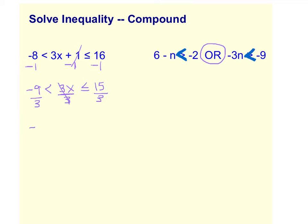So your 3's cancel, and we end up with a negative 3 is less than X, which is less than 5.